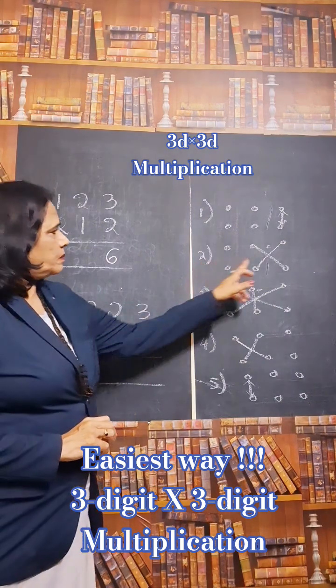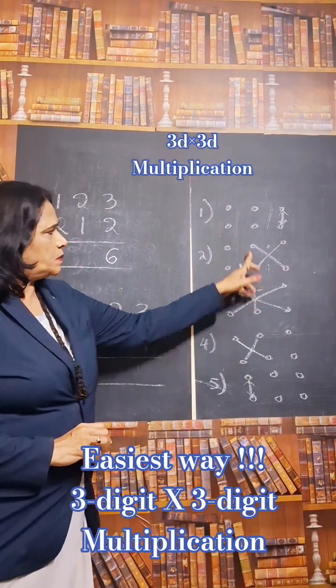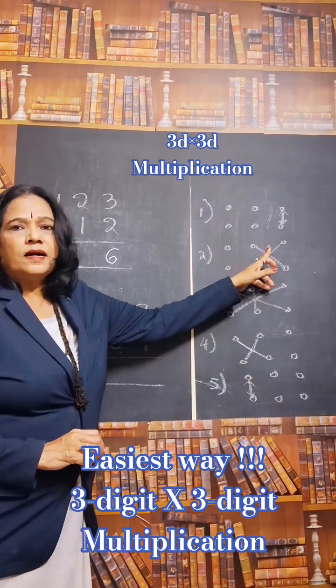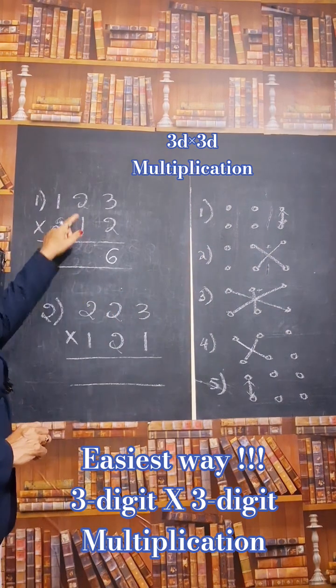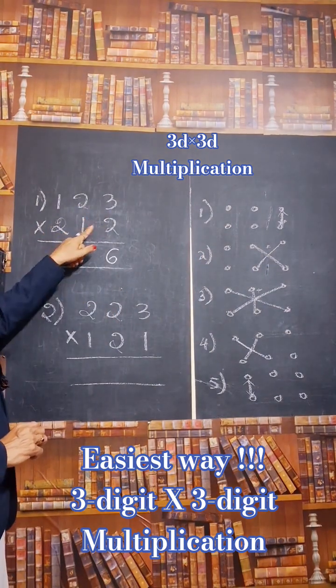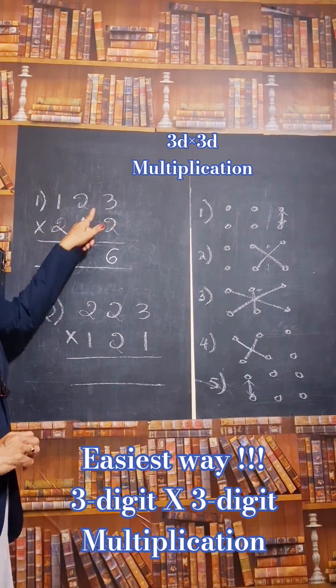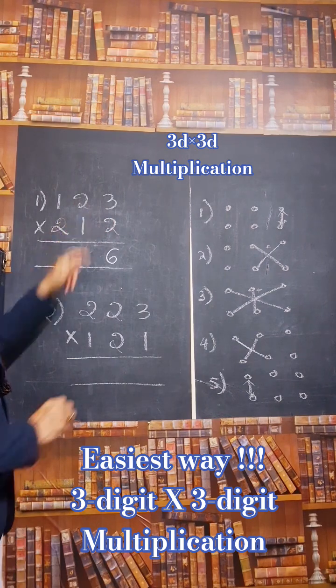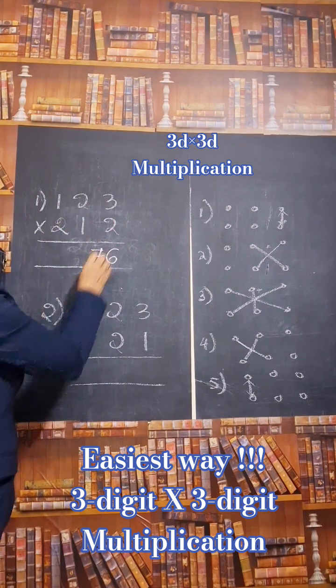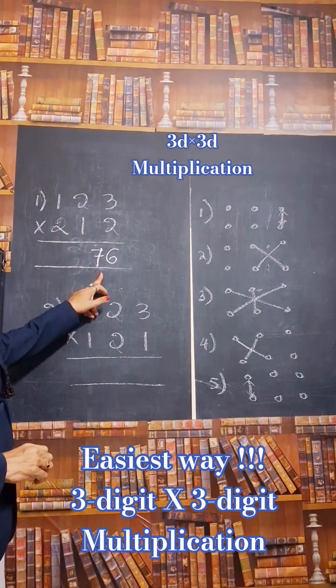See the second step. Multiply units place and tens place. Cross multiplication and add. So these two and these two. 2 twos are 4 plus 3 ones are 3. 4 plus 3? 7. Okay. That is the second step.